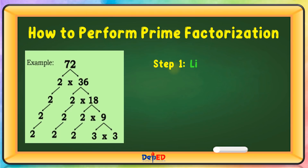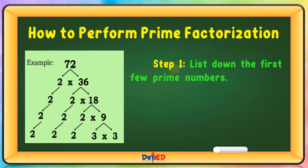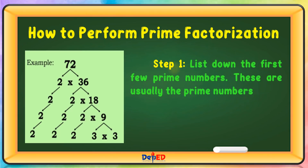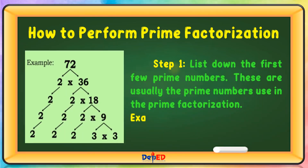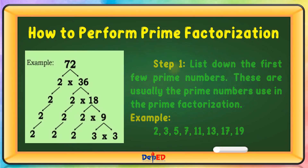Step 1: List down the first few prime numbers. These are usually the prime numbers used in prime factorization. For example: 2, 3, 5, 7, 11, 13, 17, and 19.